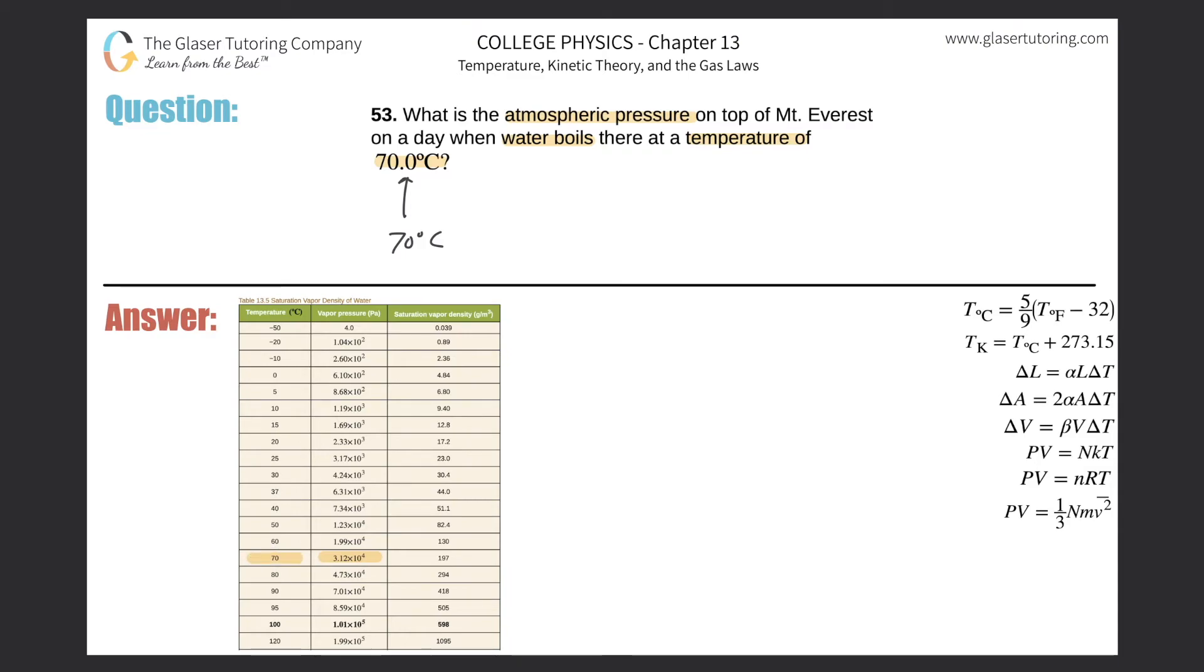So essentially then, simply here, that atmospheric pressure will equal 3.12 times 10 to the fourth. And that is in Pascals.